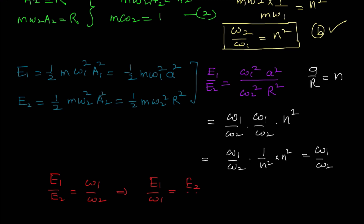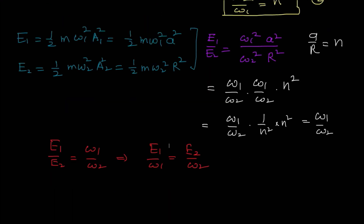So the two correct options are option B — ω₂/ω₁ = n² — and option D — E₁/ω₁ = E₂/ω₂. Thank you.